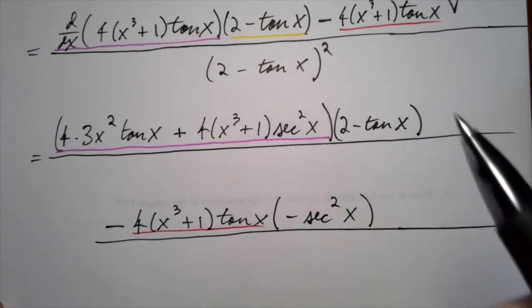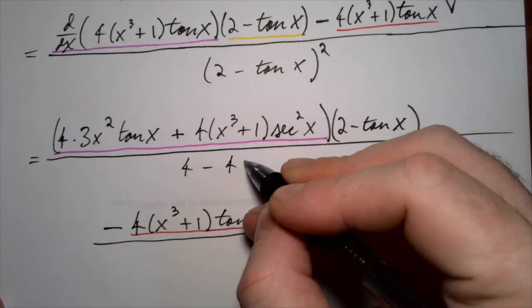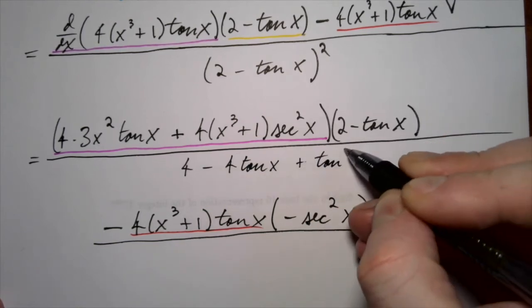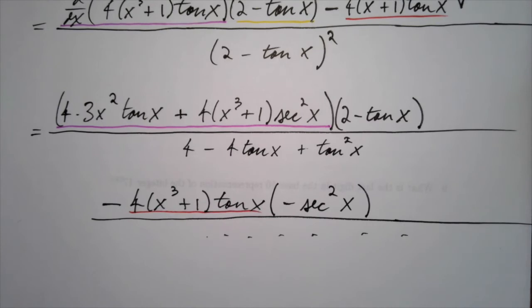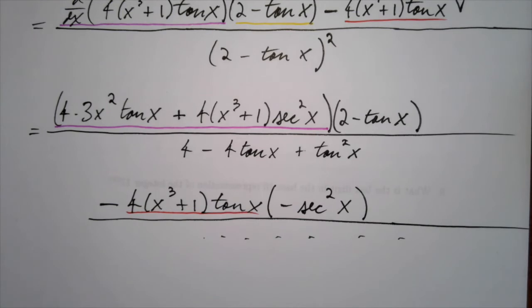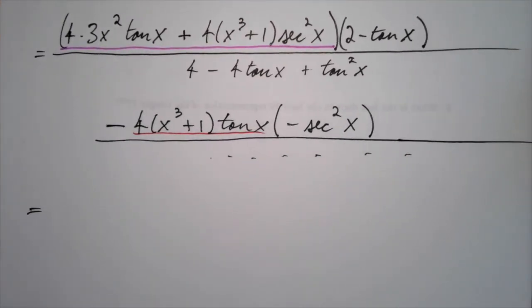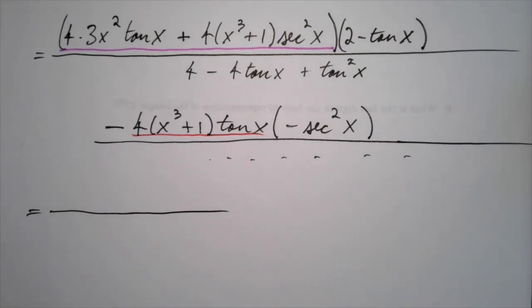We still have the denominator. We need to square two minus tangent of x. I get four minus four tangent of x plus tangent squared of x in the denominator. So, what do we get? At this point, we're done taking derivatives. We just need to analyze what we got.